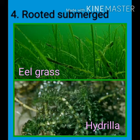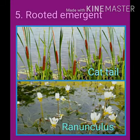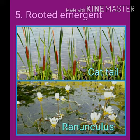The next type is rooted emergent. Roots are fixed in the soil and completely underwater, and these plants grow in shallow water. Cattails and ranunculus are examples of rooted emergent plants.